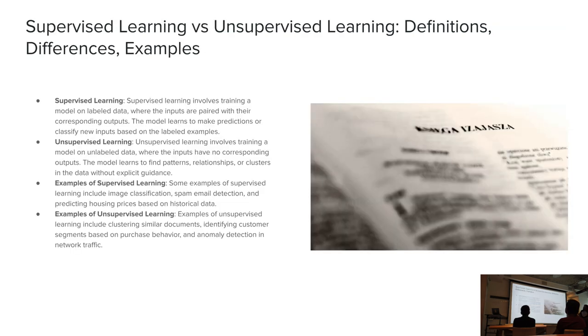Here's some different examples of what supervised learning and unsupervised learning is. Supervised learning involves training of a model on labeled data where the inputs are paired with their corresponding outputs. Unsupervised learning involves training the model on unlabeled data where the inputs have no corresponding outputs. With that type of unsupervised learning, the model learns to find patterns, relationships, or clusters in the data without explicit guidance.